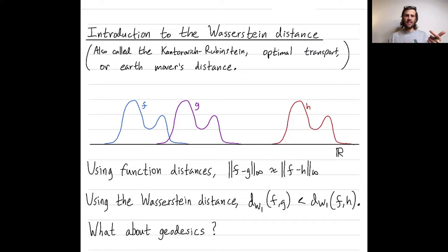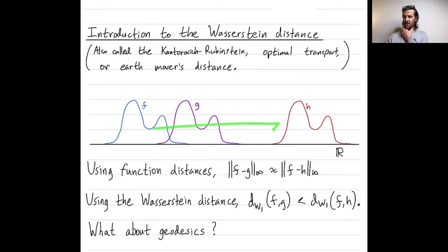By contrast, in the Wasserstein distance, what's the geodesic between f and h? You just start at f, and then one-quarter of the way there you're about at g. One-half of the way there you're at this function, three-quarters of the way there you're at this function, and finally you get to h. As you can tell, geodesics in the Wasserstein space can really preserve the shape of a function much more faithfully.